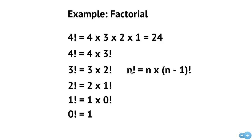For the recursive case, n factorial can be defined as n times (n−1) factorial. That's what we had in each case: 4 factorial is 4 times 3 factorial (since 4 minus 1 is 3), and so on down the line.